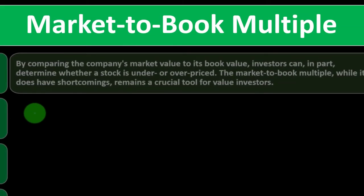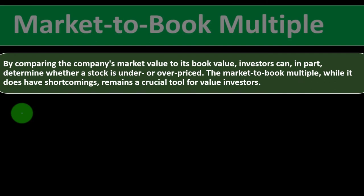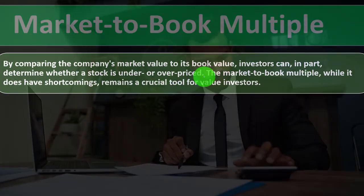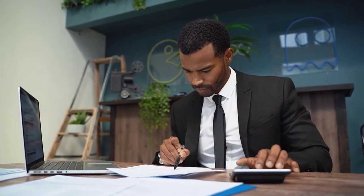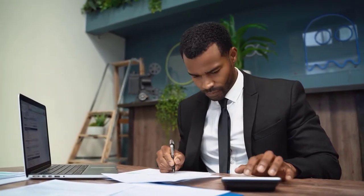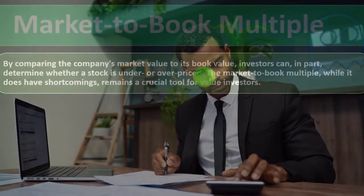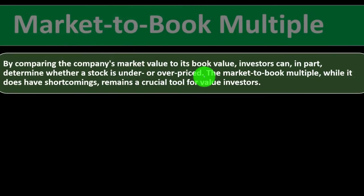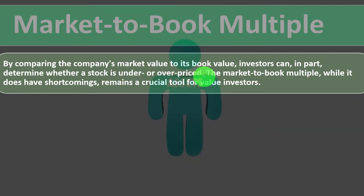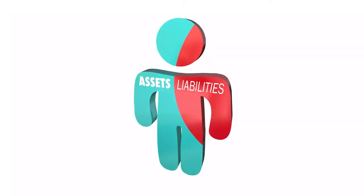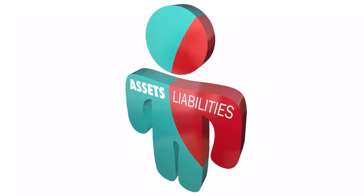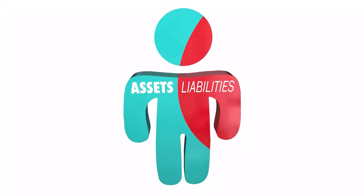By comparing the company's market value to its book value — the market-to-book multiple — investors can in part determine whether a stock is under or overvalued. Once we know the book value from assets minus liabilities, we can compare it to the market price at which the stock trades. We also need to keep assessing liquidity — current assets versus current liabilities — to ensure the company remains solvent.